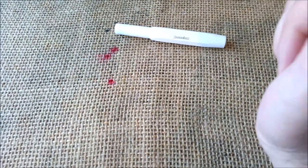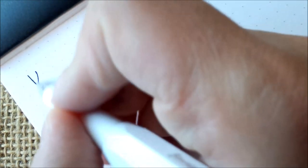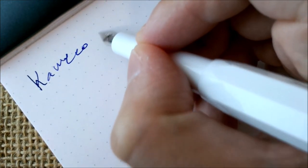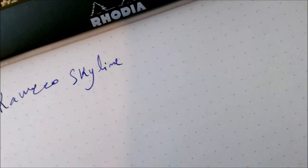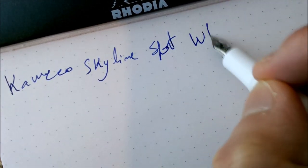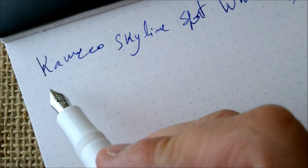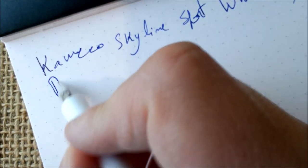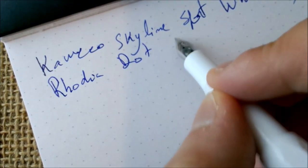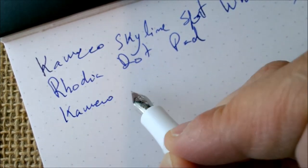Let's go for the writing sample. This is the Kaweco Skyline Sport in White. This one has the fine steel nib. The paper is the usual Rhodia dot pad and the ink is the Kaweco Royal Blue.